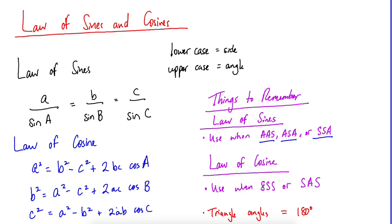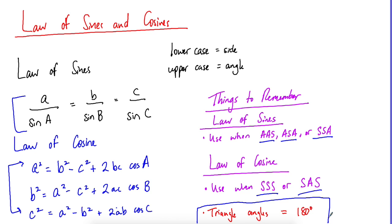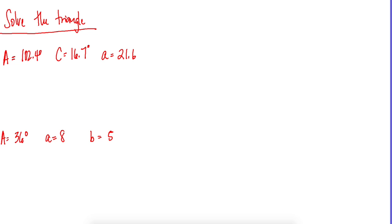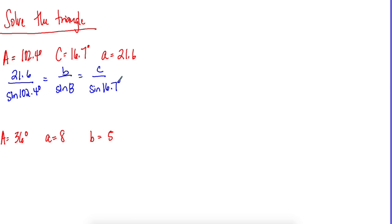Now for Law of Sines and Law of Cosines. There are different variations of the Law of Cosines depending on which side or angle you're solving for. Law of Sines uses one simple equation. Remember: triangle angles sum to 180 degrees. Lowercase letters are sides, uppercase letters are angles — this applies to both laws.